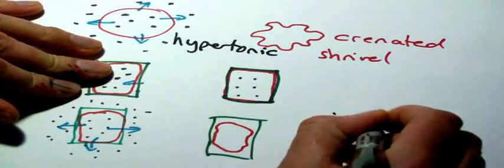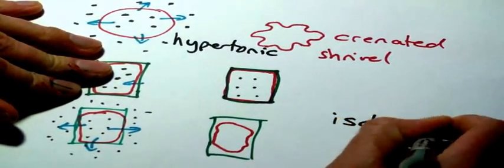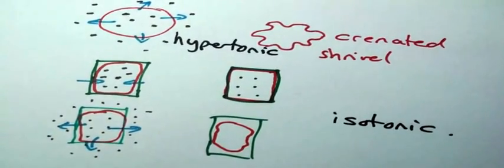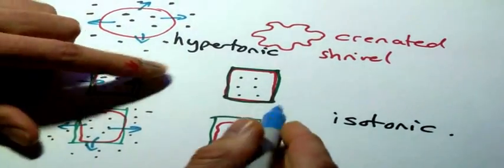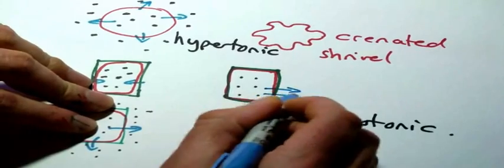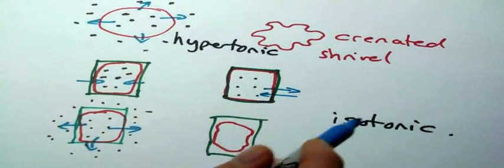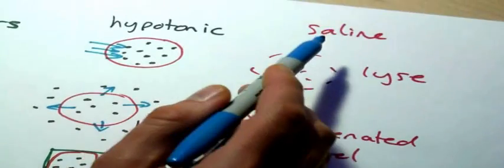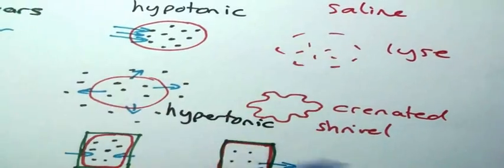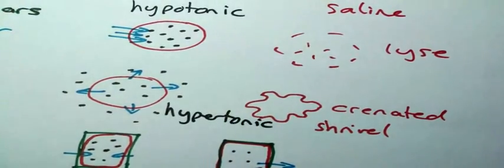If you get the point where it's exactly the same, so the amount of water going in and out of the cell is the same, because it never actually stops, it just balances out. That's called the isotonic point. So saline, which we mentioned before, would be isotonic for your body.